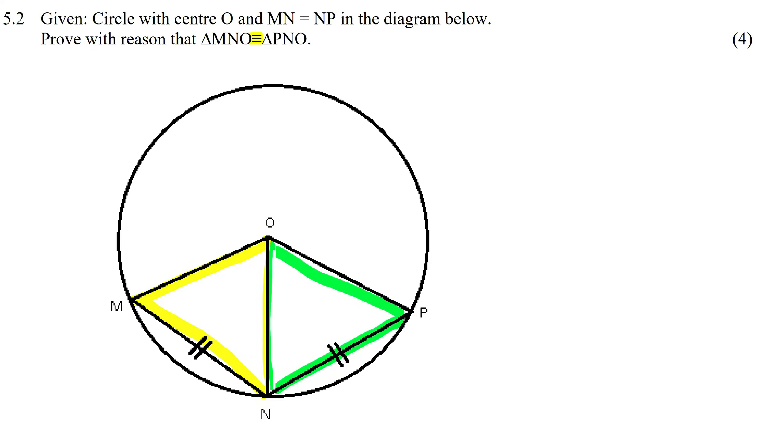So with congruency, we need to either find side, side, side; side, angle, side; angle, angle, side; or RHS, which is when you have a right angle, hypotenuse, and a side. This is congruency.